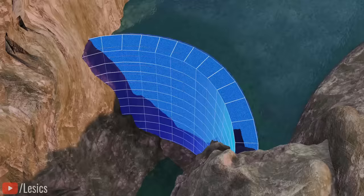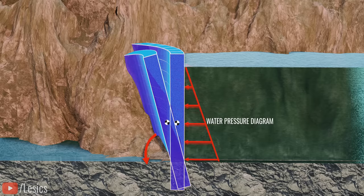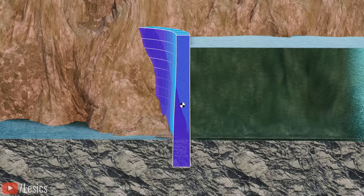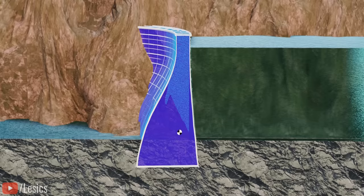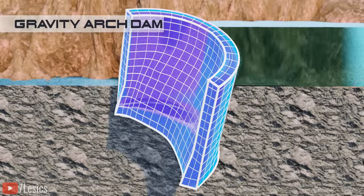However, if we put the dam under service, it still has a good chance of toppling due to the water pressure. We can solve this issue by increasing the dam's width gradually toward the base. The approach will lower the dam body's center of gravity. The lower the center of gravity, the higher an object's stability. The design we achieved just now is called a gravity arch dam, and this design can overcome the issues of tensile stress and stability.